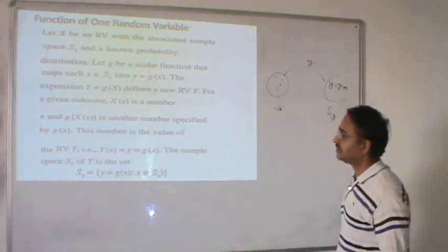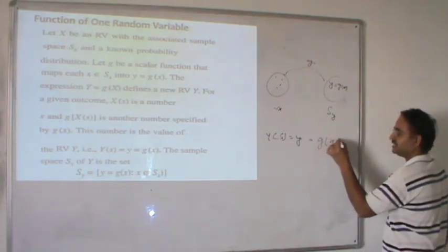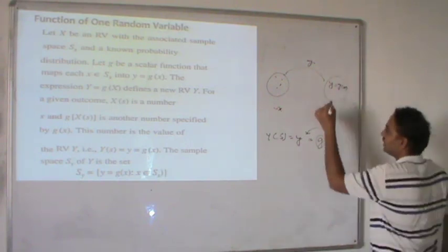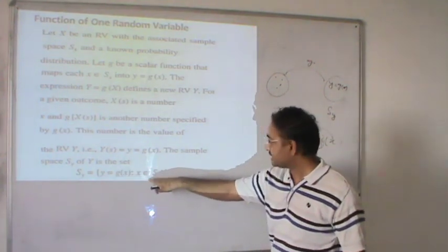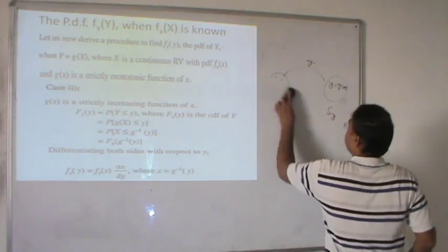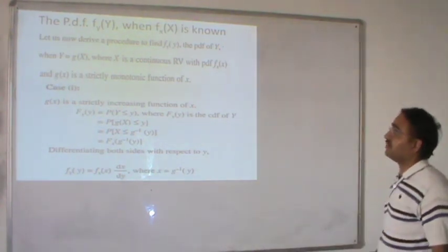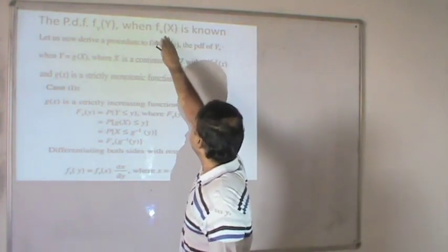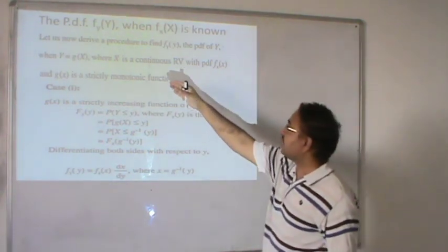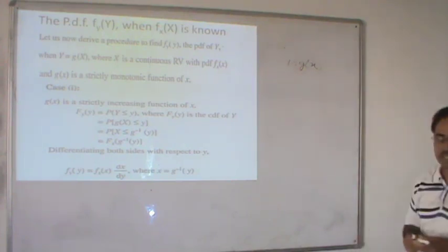This number is the value of random variable Y. We can write Y(S) = Y = G(X), and the scalar function G transforms X into Y. The sample space of Y is given by S_Y where Y = G(x) such that X is an element of sample space S_X. Now if we want to find the probability density function f(y), given that Y = G(X) where X is a continuous random variable.